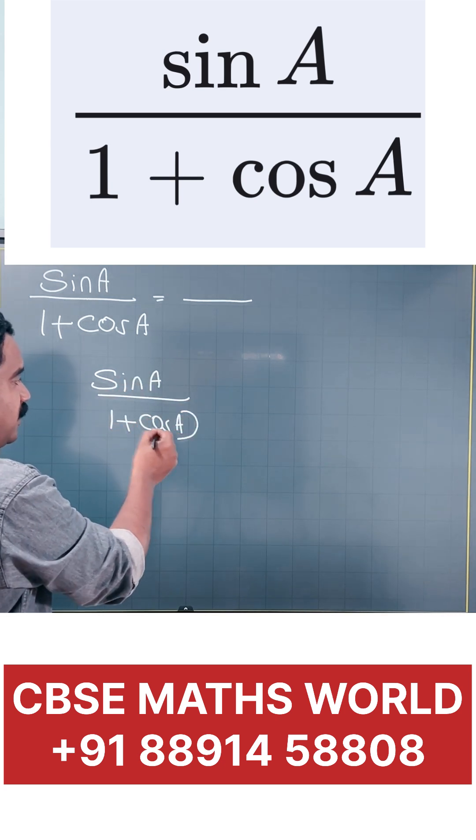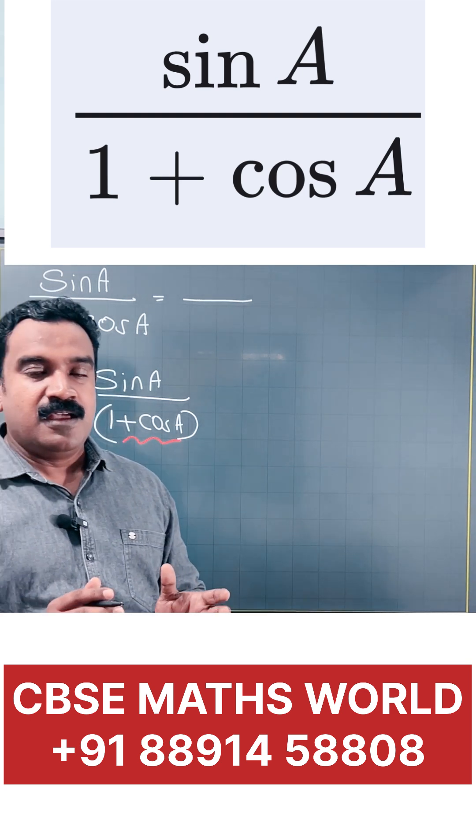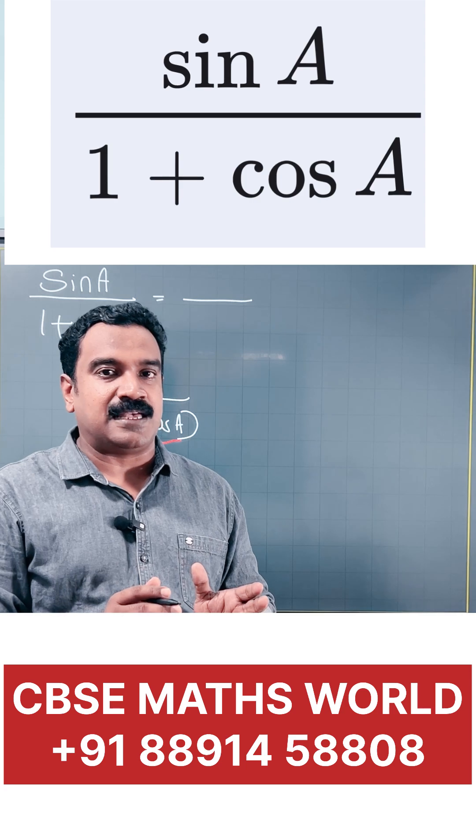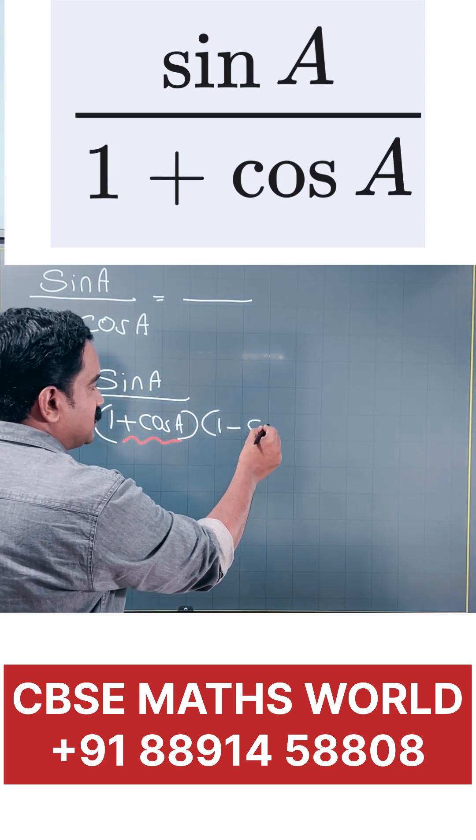This type of question, what we want to do is just to take the conjugate of the denominator, 1 plus cos A. What is the conjugate? Just to change the sign in between these two terms. 1 plus cos A, its conjugate is 1 minus cos A.